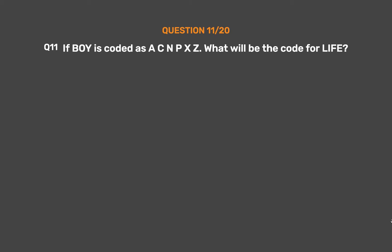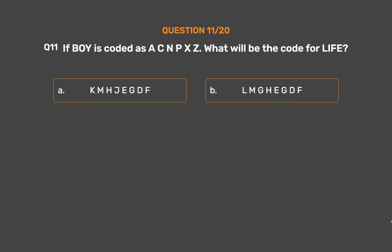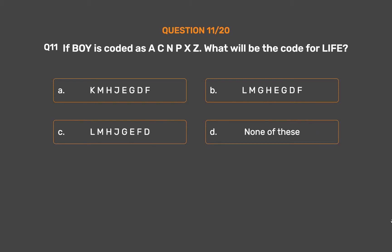Question number 11: If BOY is coded as AC and PXZ, what will be the code for LIFE? Option A: KMHJEGTF. Option B: LMGHEGTF. Option C: LMHJEGTF. Option D: None of these.